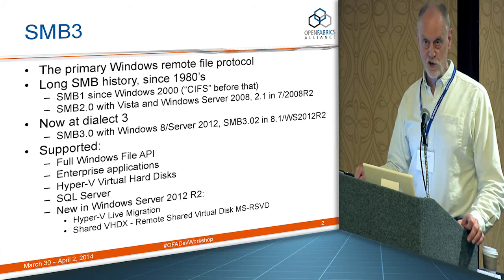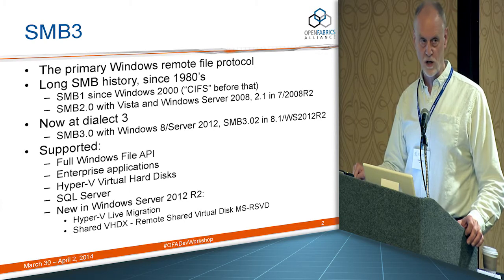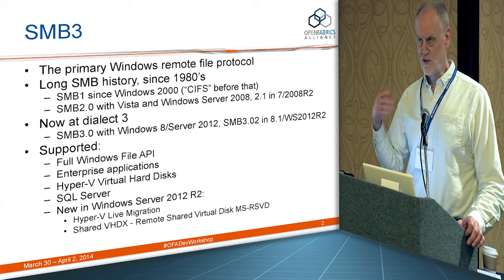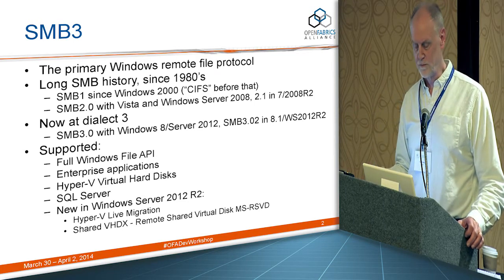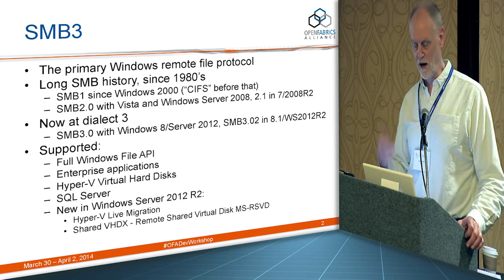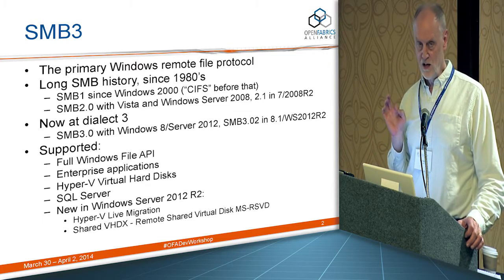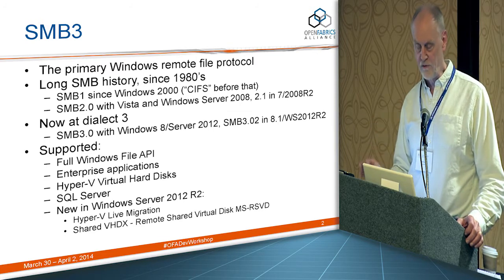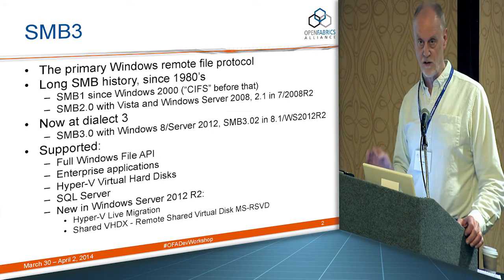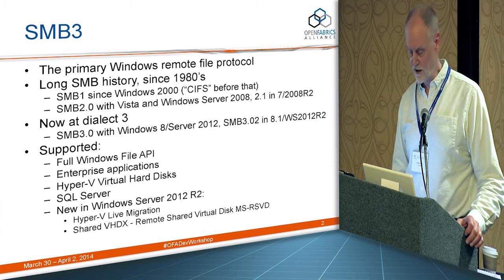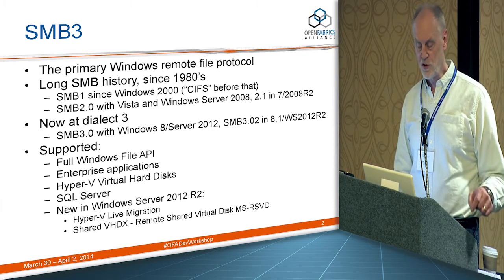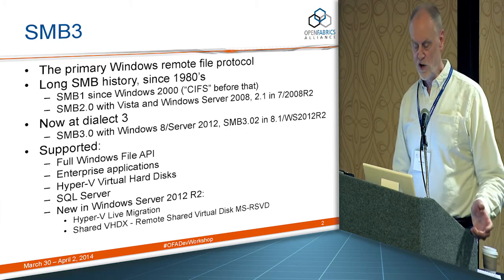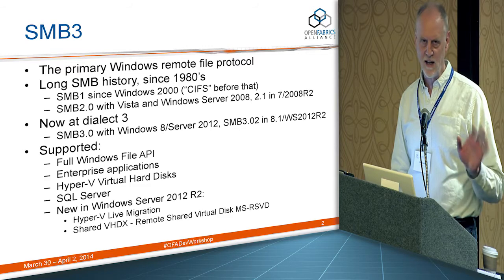Currently we're at dialect version 3, and it's a very different protocol. It's the same on-the-wire protocol but there are a large number of new operations. It's graduated to, if you will, an enterprise storage file system for enterprise applications. Out of the box it fully supports the Windows file API as well as Hyper-V and SQL Server — major Windows enterprise applications. And in Server 2012 R2 we additionally use it for live migration, memory-to-memory transfer, and shared VHDX, which is a little bit like iSCSI — it's SCSI over SMB.